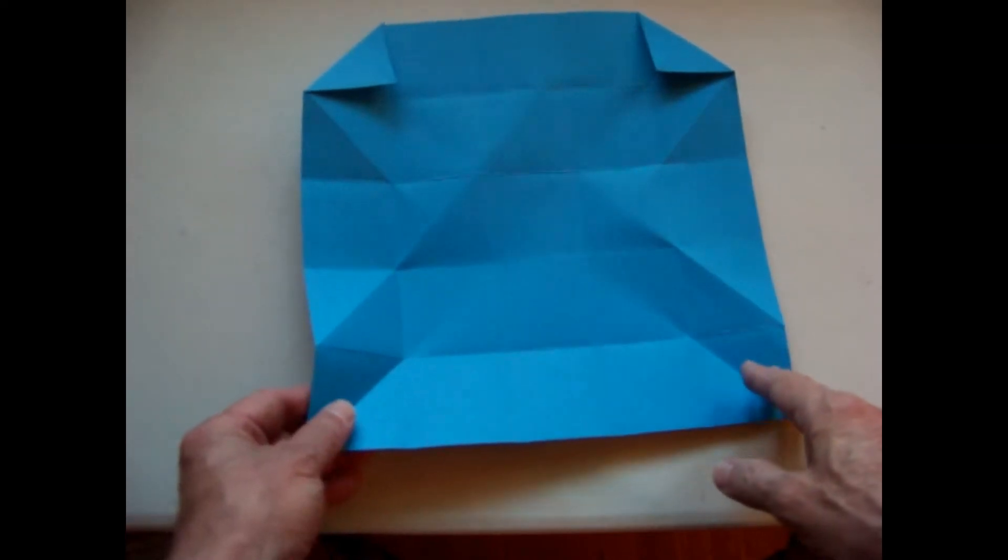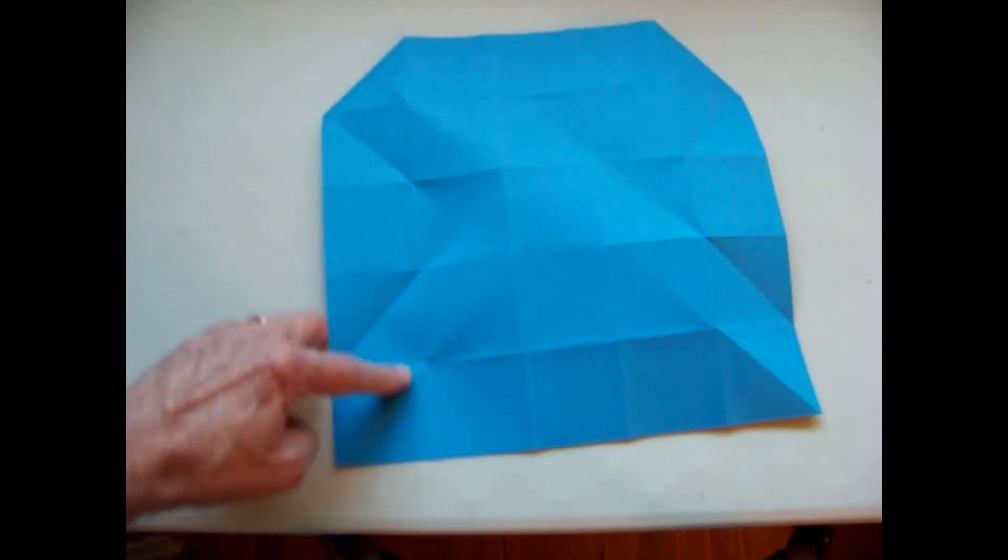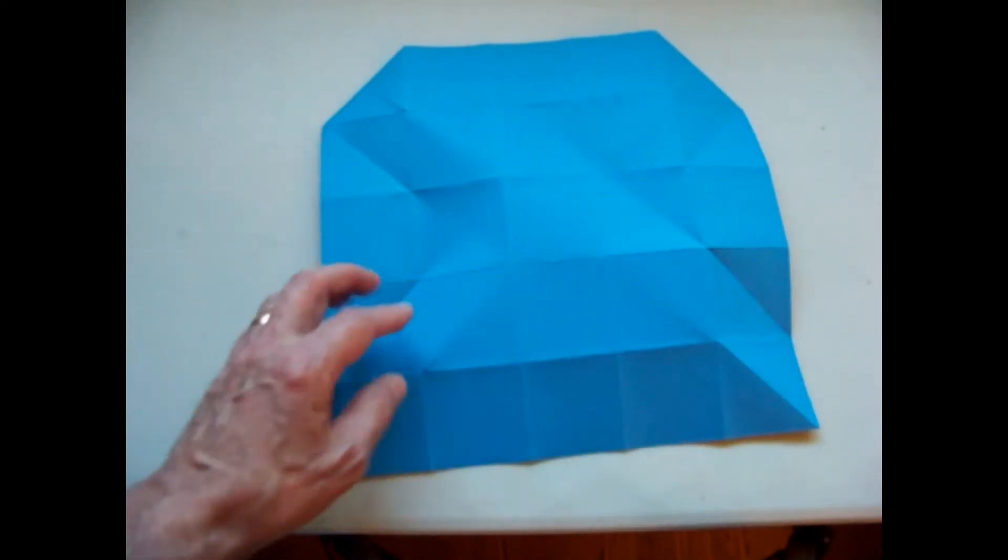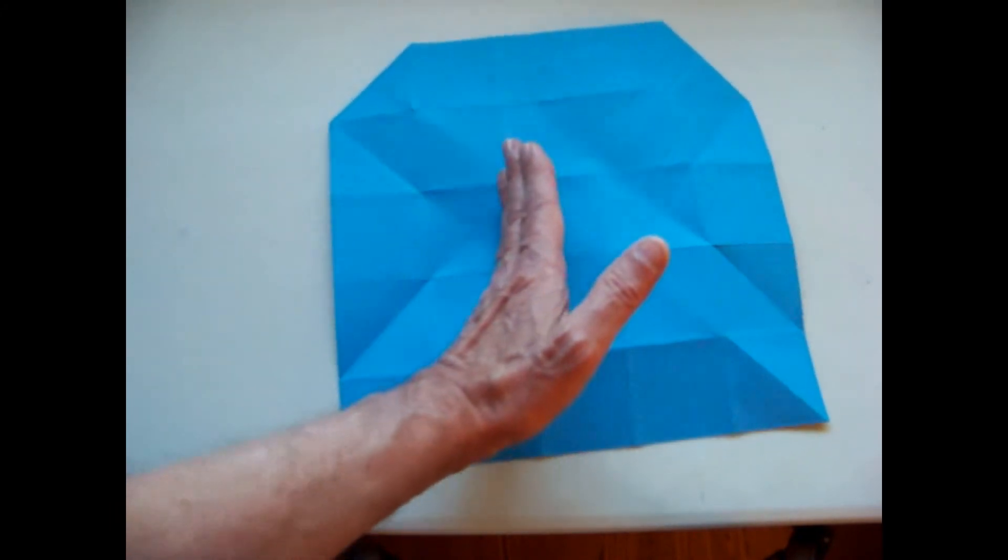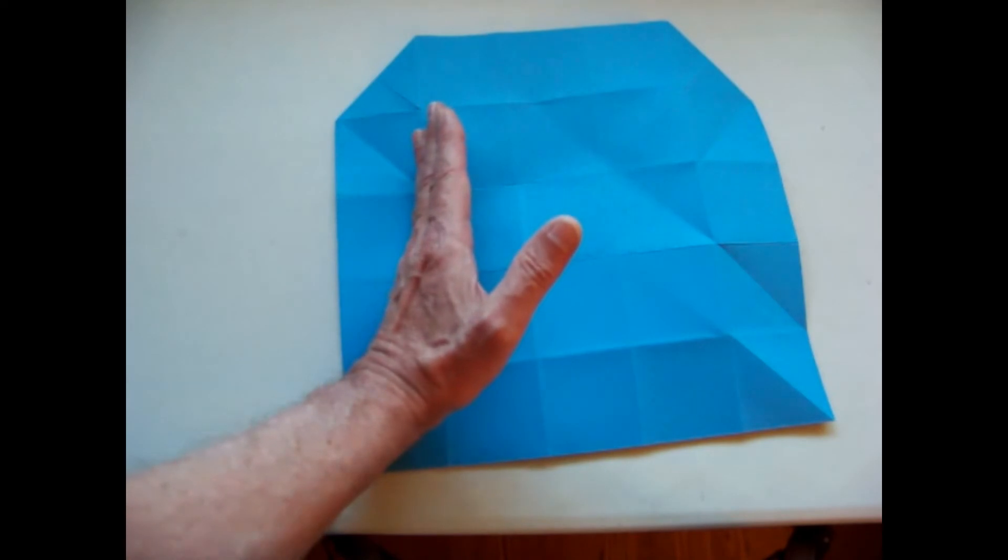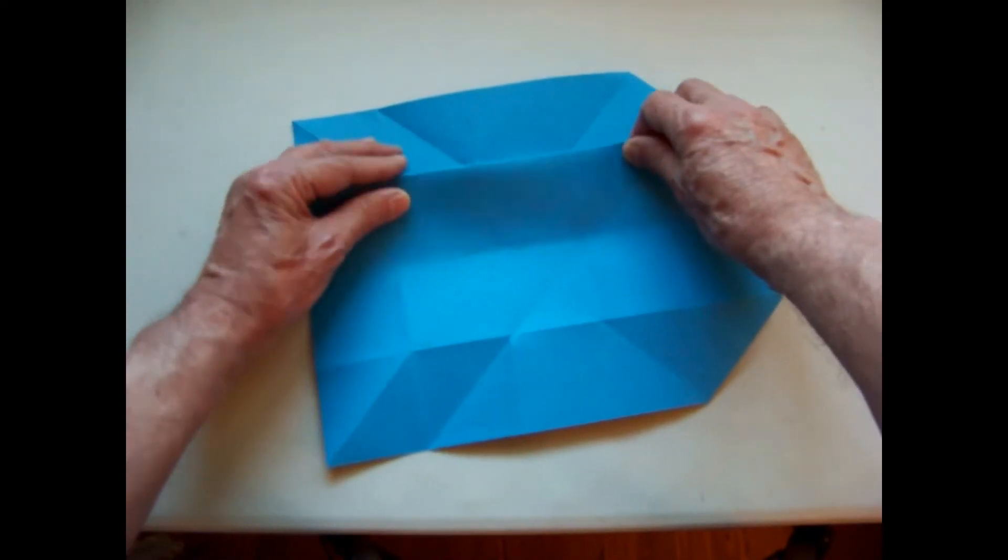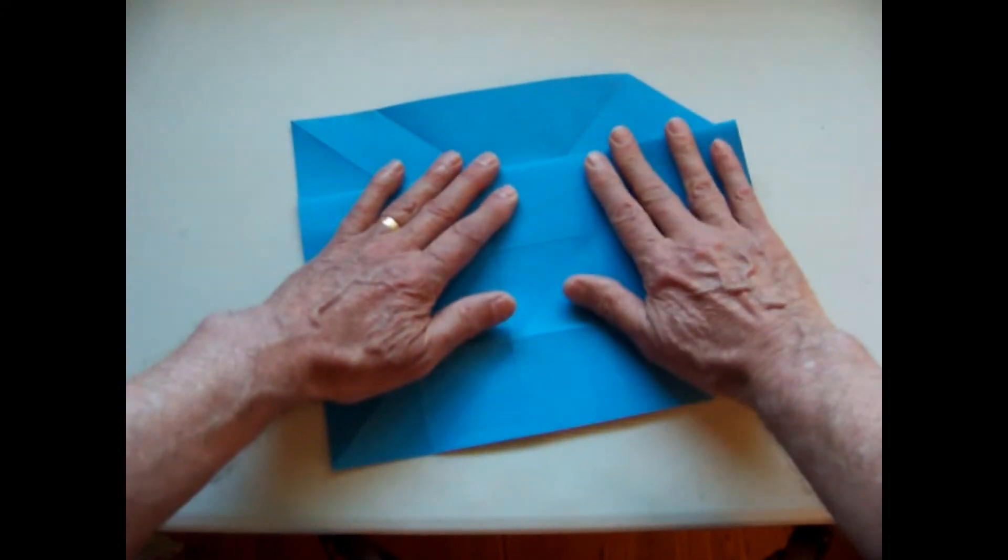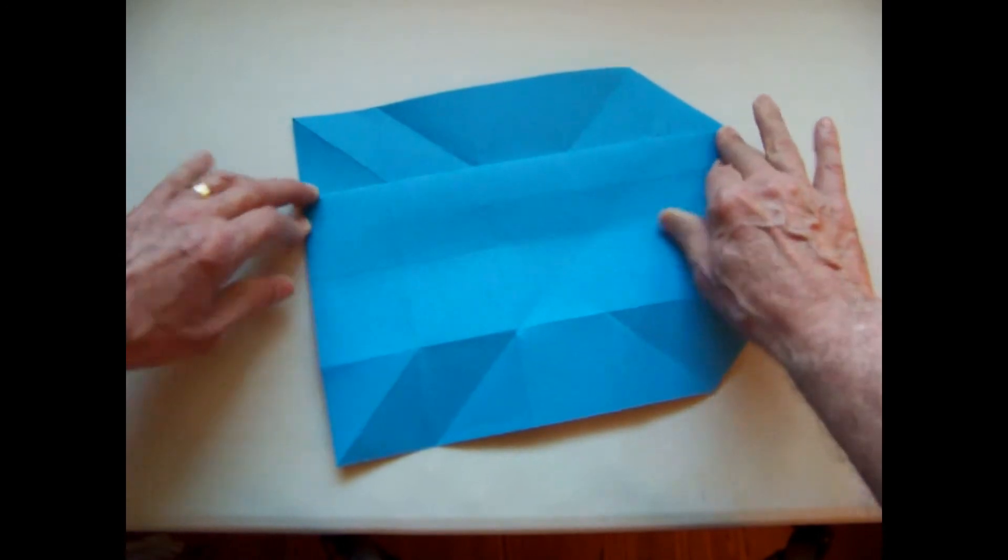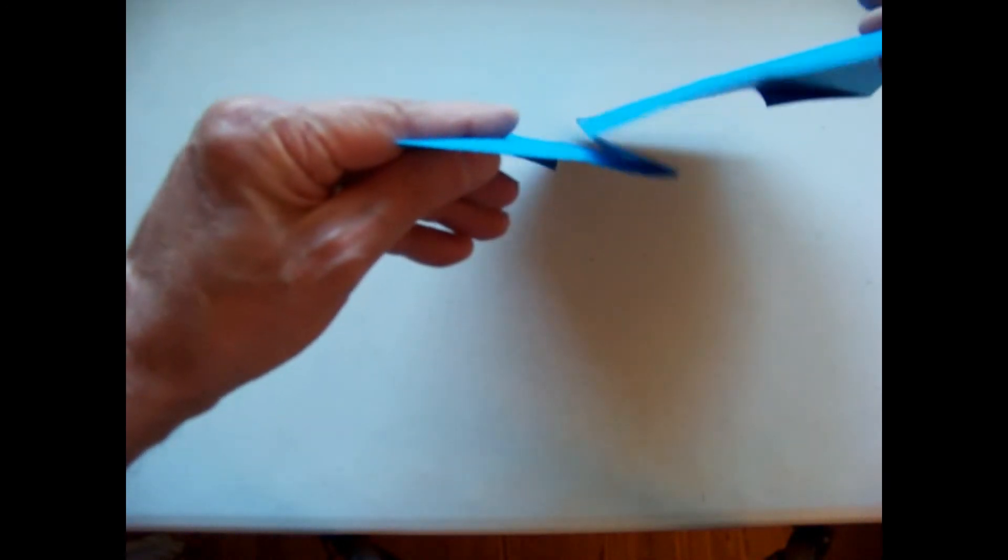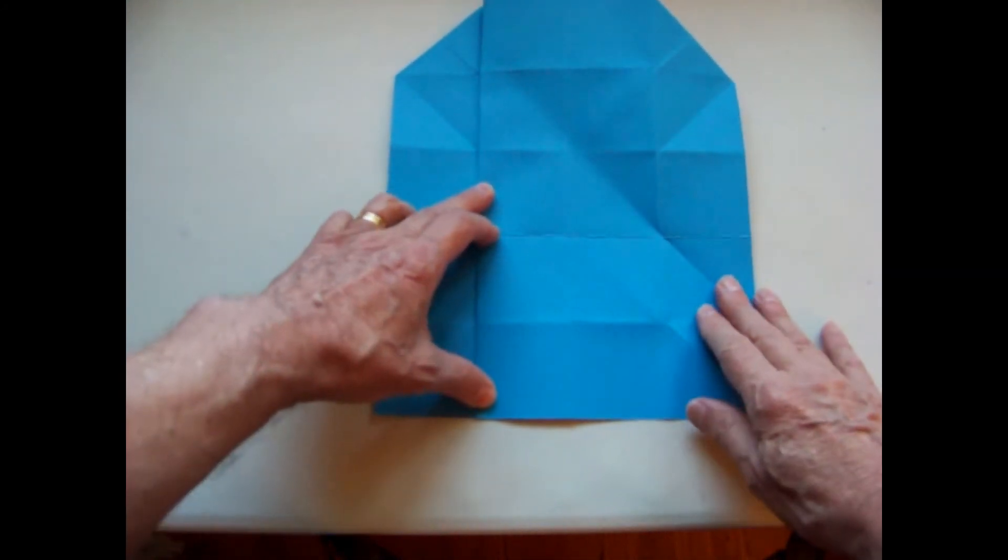Turn the paper over to the other side. Notice the vertical lines. Bring the second vertical line over to meet the first vertical line, forming a pleat. Repeat on the other side.